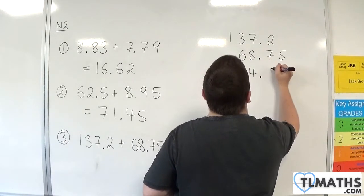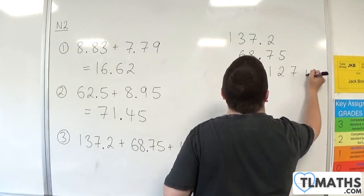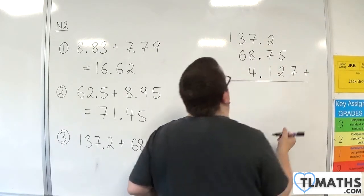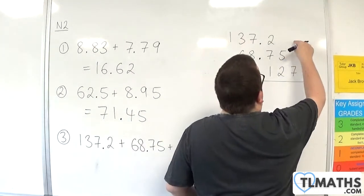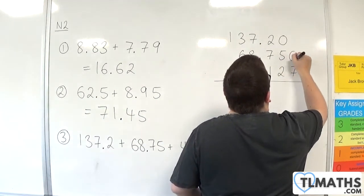So, 4.127. And I'm going to add these three numbers together. We've got some gaps here, so I'm just going to fill those with 0s.